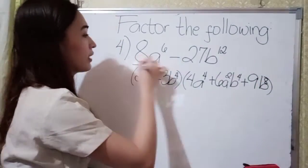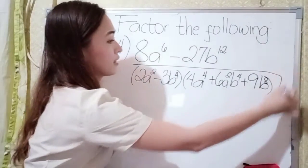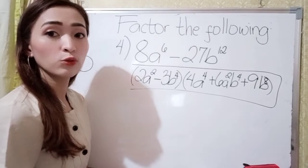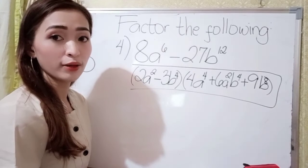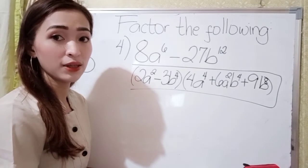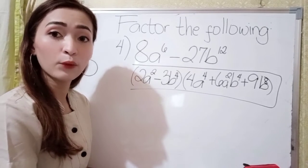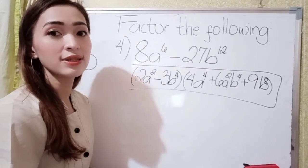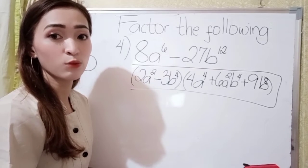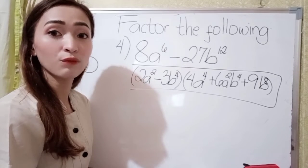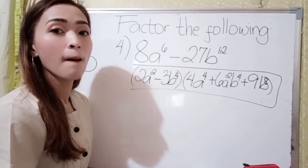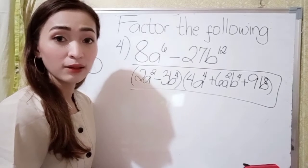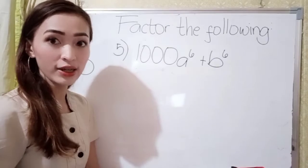So, our final answer in number 4 is 2a squared minus 3b to the 4th power, times 4a to the 4th power plus 6a squared b to the 4th power plus 9b to the 8th power.